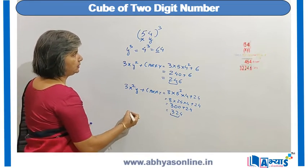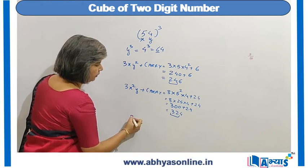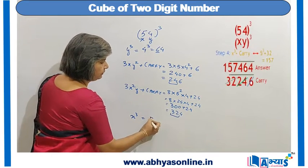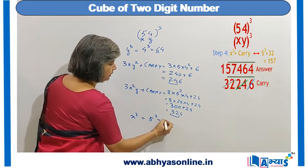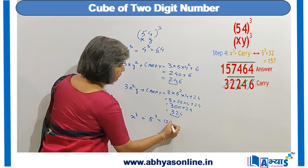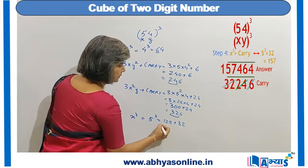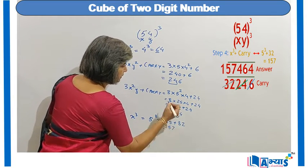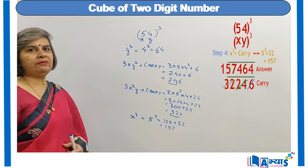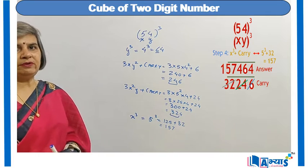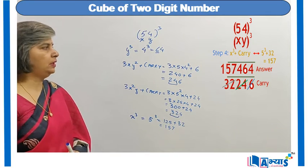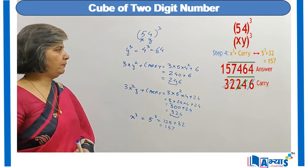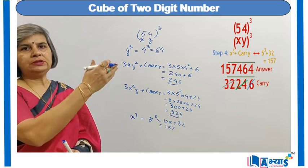In the last step I find the value of x cubed. x is 5, so 5³ is 125. I add the carry of 32 and get 157. This 157 is prefixed in the answer, so the final answer is 157464.